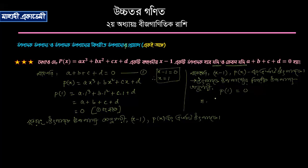If p of 1 is equal to 0, then we have to write p of 1 equal to 0.